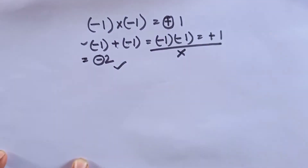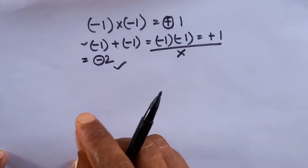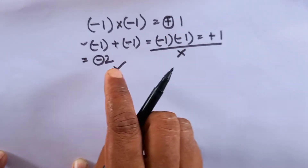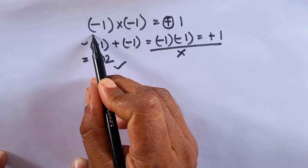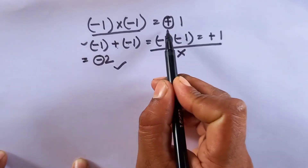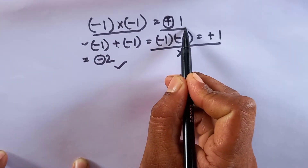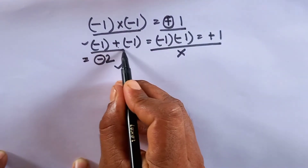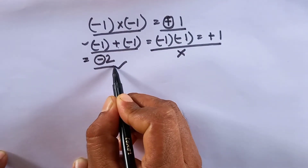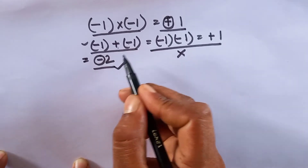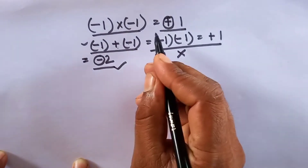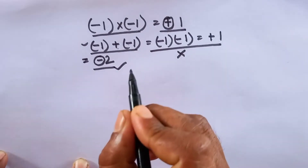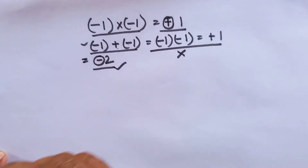What is the logic here? There are two different logics used in different types. When you multiply, then this is plus 1. When you add, the result is different. So two different logics are used two times — one is not used for the other. This is the basic of algebra.